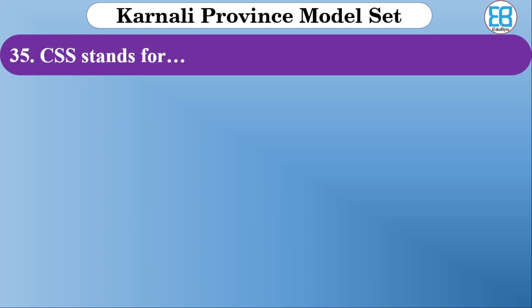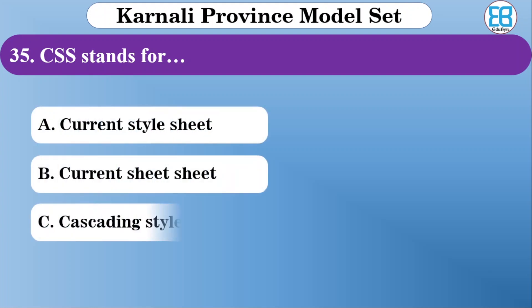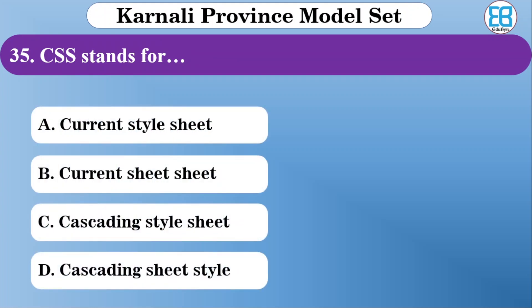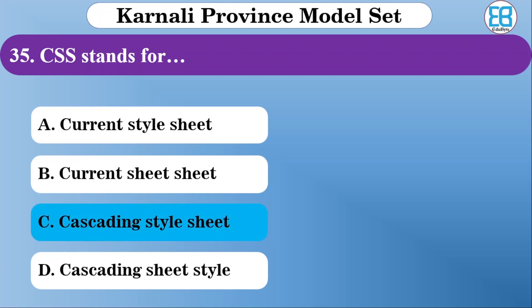What does CSS stand for? The options are Current Style Sheet, Current City Styles, and Cascading Style Sheet. The correct option is Cascading Style Sheet — CSS stands for Cascading Style Sheet.